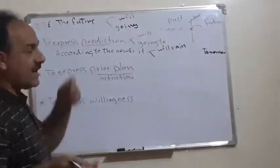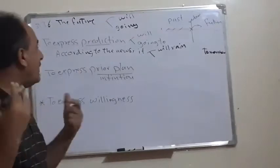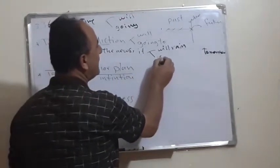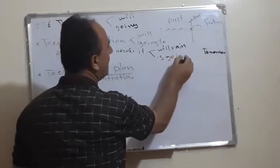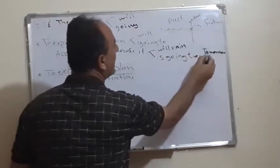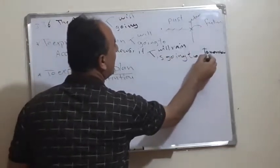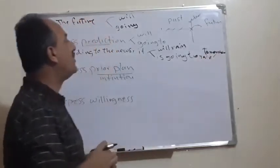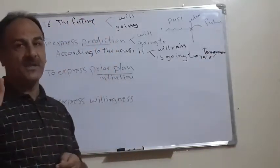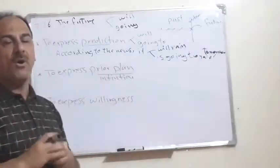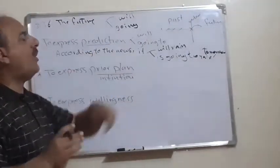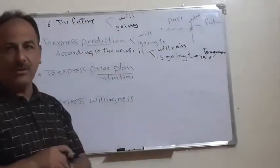Alternatively, according to the news, we can also say: 'It is going to rain tomorrow.' So in the case of prediction, we can use both forms — either 'will' or 'going to.'